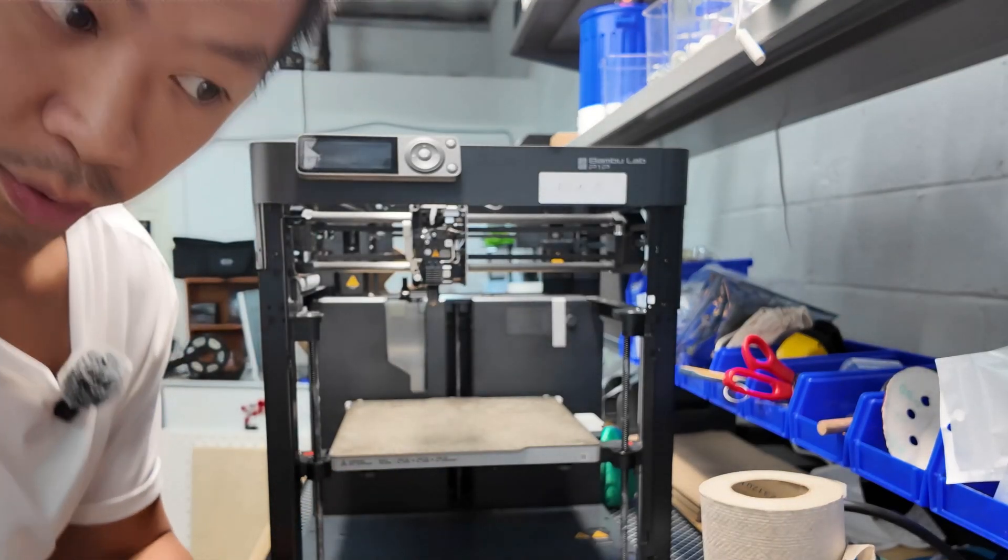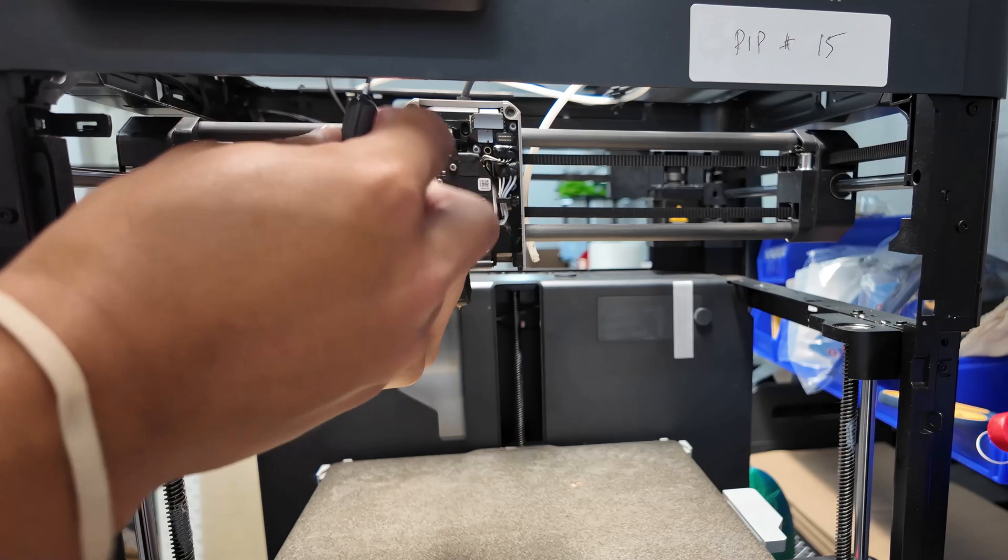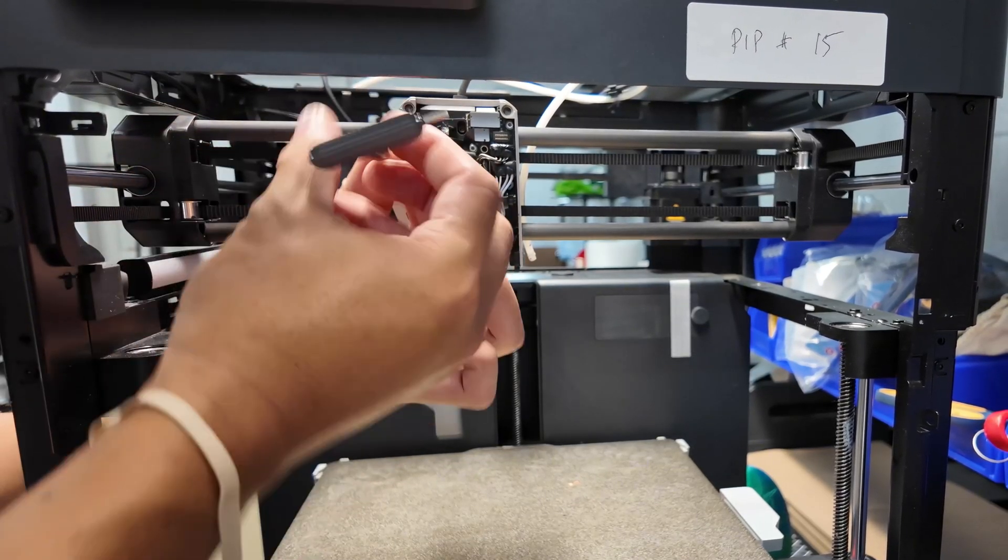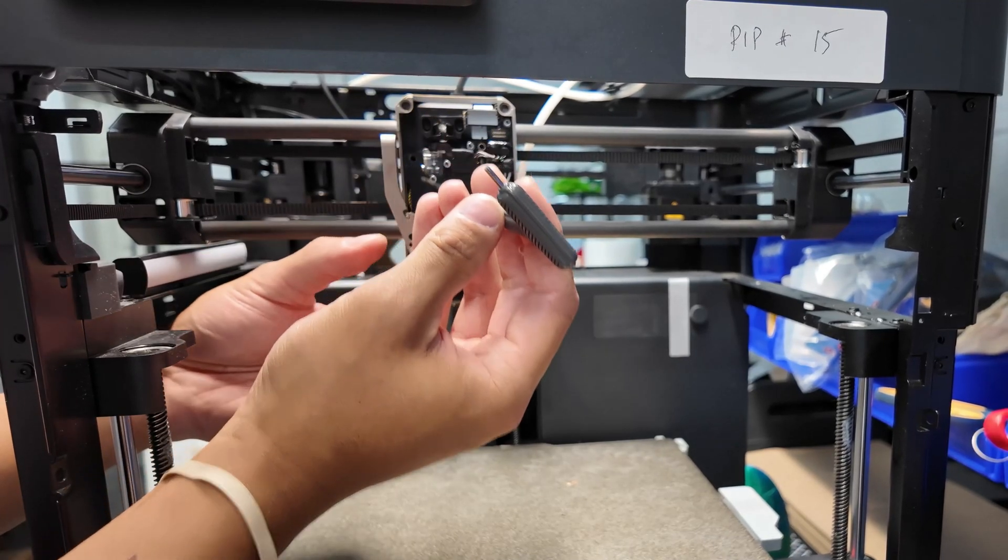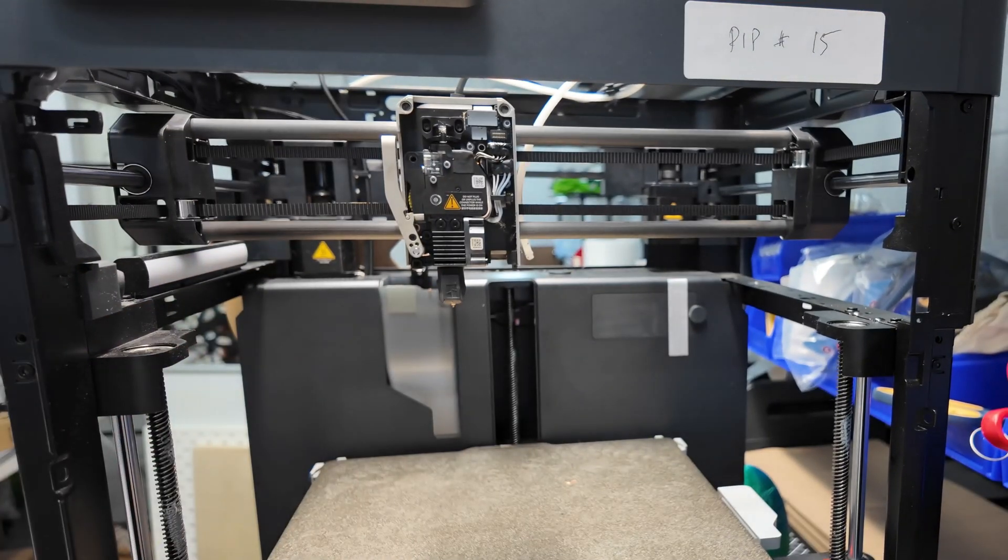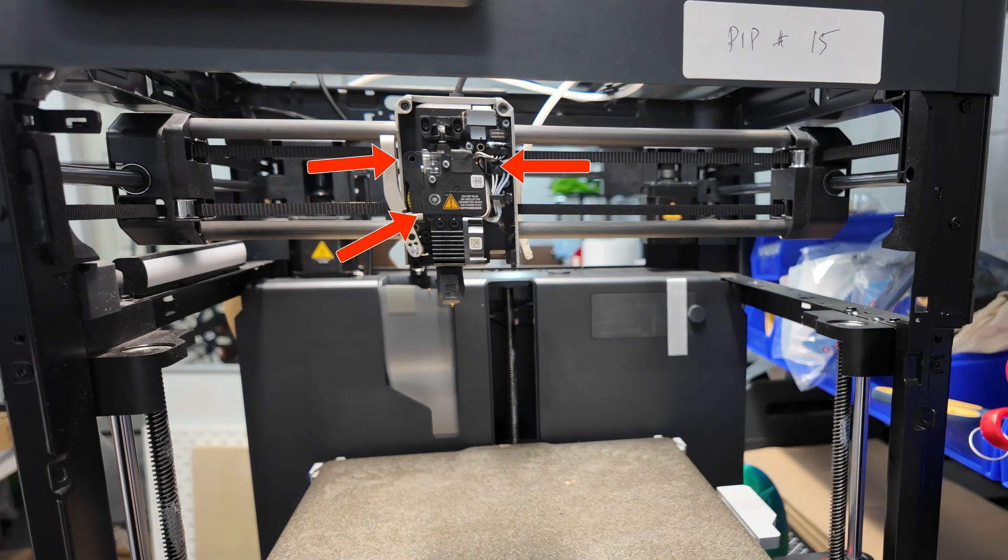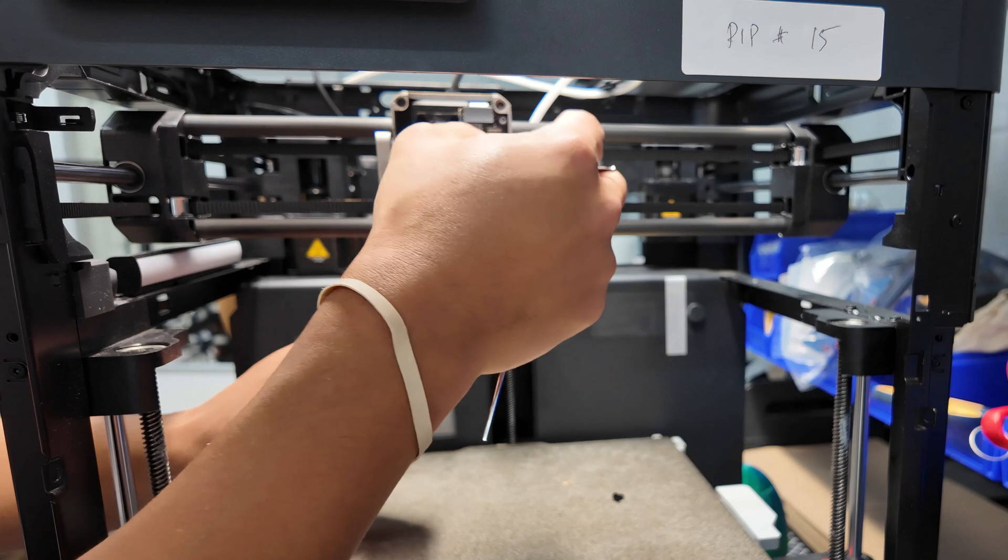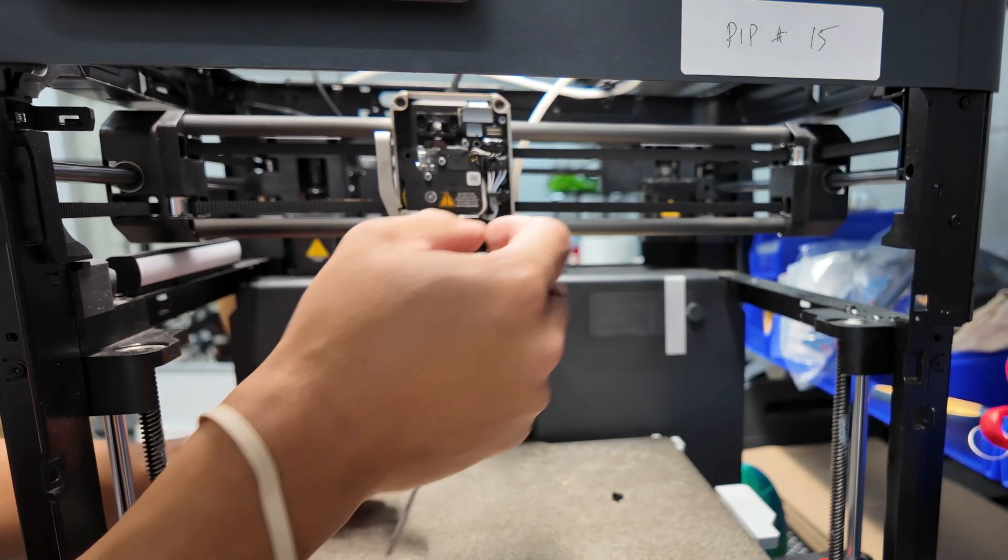All right, so now let's disassemble the extruder. Disassembling the extruder is actually pretty straightforward. There's three screws that need to be taken out. And I just lost one of the screws. All right, so there's one, one here.